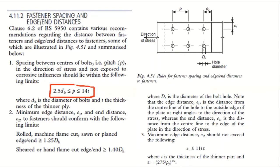You have to consider these recommendations from the clause: the pitch p should satisfy 2.5 × bar diameter ≤ pitch ≤ 14t. With the bar diameter plus the 1mm allowance giving dh, you also have the end distance. The minimum end distances e1 and e2 must be considered, and for sheared or hand-flame-cut edges it should be greater than 1.4 × dh.